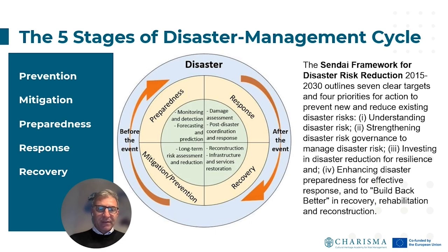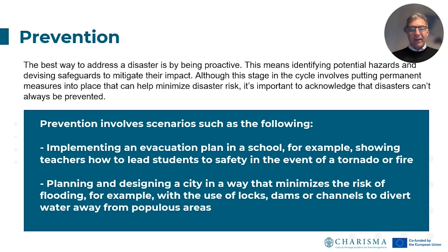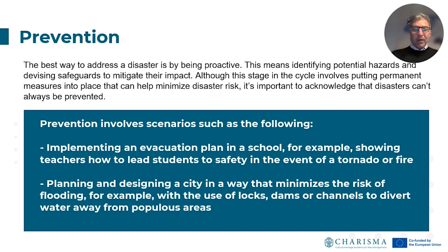We define five main sections of the cycle: prevention, mitigation, preparedness, response, and recovery. Prevention is the first we define, and it's very important to understand that in order to manage disasters we need to be proactive — first identifying the potential threats and defining the safeguard measures. It's important to understand that disasters cannot be prevented; the risk by definition cannot be zero.